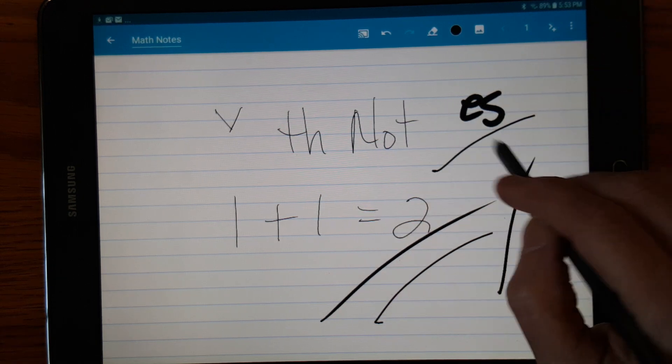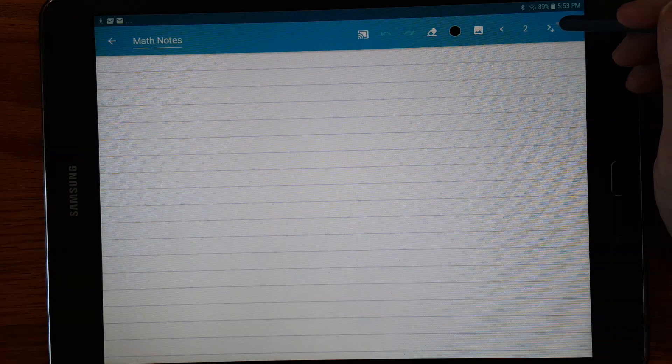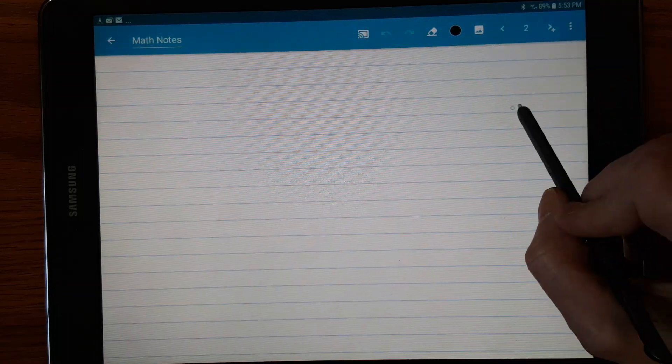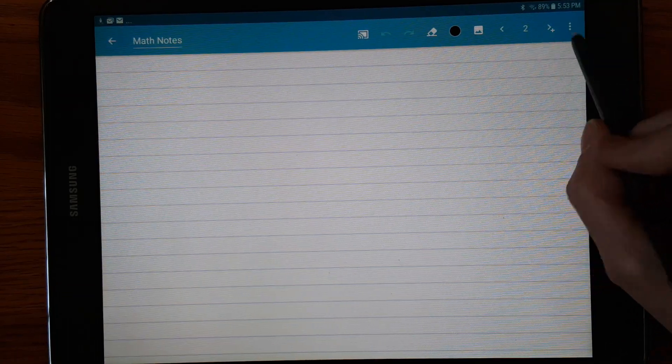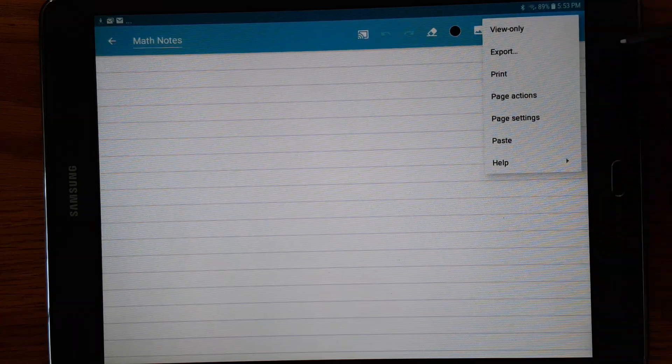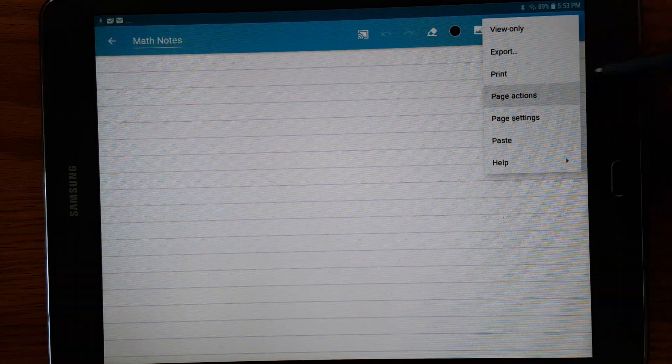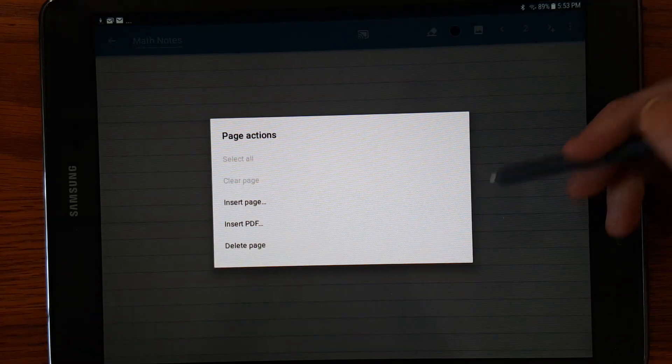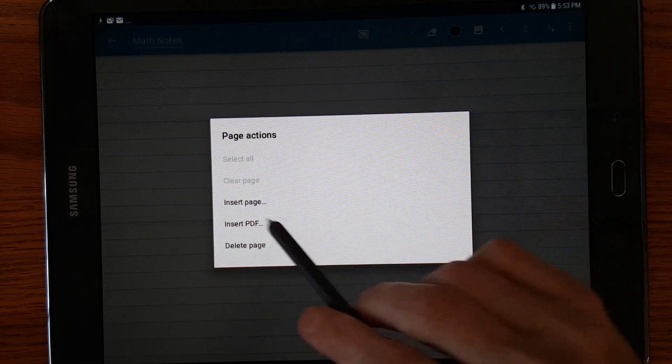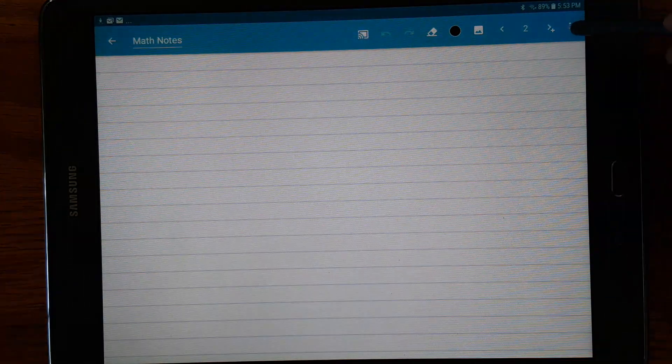Now, lecture notes was kind of clunky when it came to turning pages. This is more like S-Note. I've got two pages here that I can switch back and forth between. And when I'm on page two, if I go further, it just adds another page. Page actions. I can insert pages. I can insert PDFs.